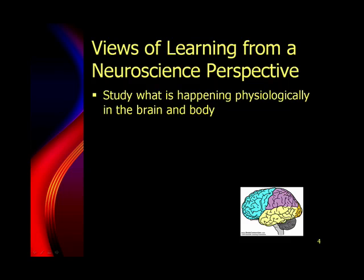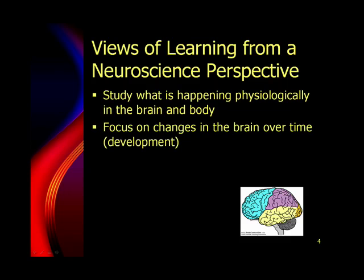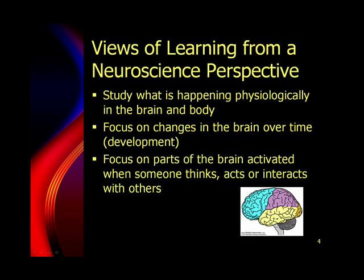From a neuroscience perspective, we were looking at what happens physiologically in the brain and body when someone learns. We were also looking at how the brain changes over time — so the development of the brain. And lastly, we were looking at the parts of the brain that are activated when we perform certain tasks, whether it be thinking, acting, or interacting with others.